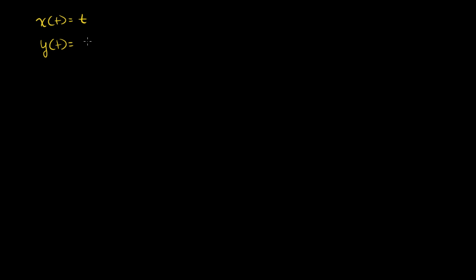So let's say my first parametrization: x of t is equal to t, and y of t is equal to t squared, and this is true for t greater than or equal to 0 and less than or equal to 2. I'll call these x1 and y1, because I'm going to do a different version of this exact same curve with a slightly different parametrization.